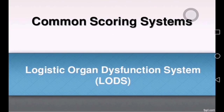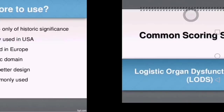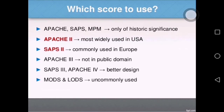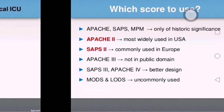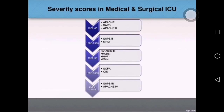LOTS stands for Logistic Organ Dysfunction System. These scoring systems are high-yield topics that every examiner wants to ask about, and they will appear in every exam — AIIMS, PGI, and NEET-PG. It is very important to know these scores and their evaluation systems.